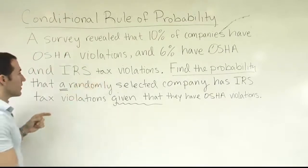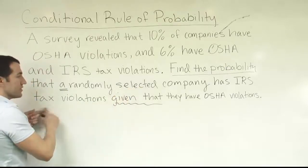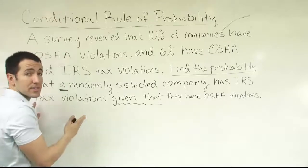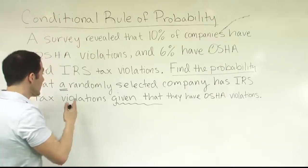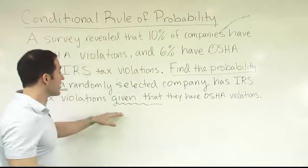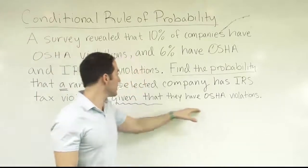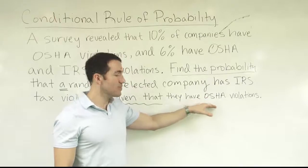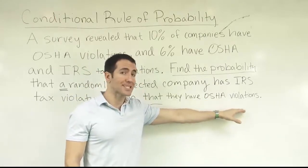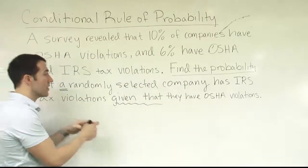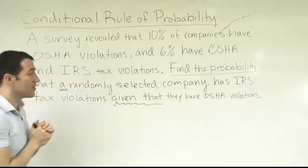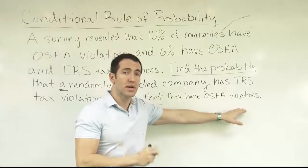When you read this problem, the idea that the company has an IRS tax violation is in question — we're asking what's the probability they have a tax violation, so it's not a certainty. But the 'given that' information is not a question mark. We're assuming it is known to be true and assumed to be correct of the company we select. So no matter which company we end up selecting, we know they will have safety violations through OSHA. Whatever follows the 'given that' condition is assumed to be true and known.